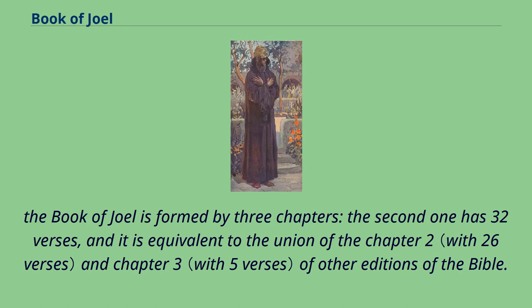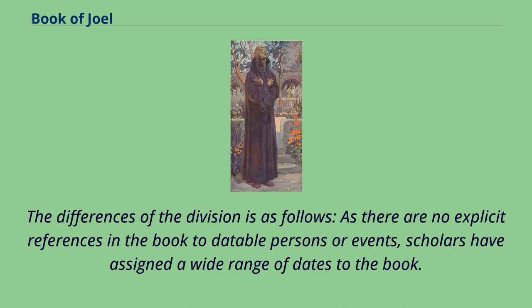The Book of Joel is formed by three chapters in some editions; the second one has 32 verses and is equivalent to the union of chapter 2 and chapter 3 of other editions of the Bible. The differences of the division are as follows.